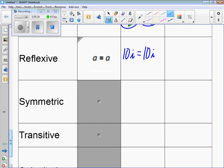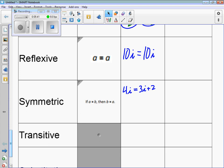Symmetric: if a equals b, then b equals a. So if 4i equals 3i plus 2, here's your a, here's your b. Then you should go the other way. It should be 3i plus 2 and that's going to equal 4i. So you can switch it around.